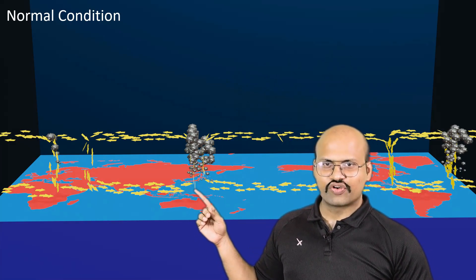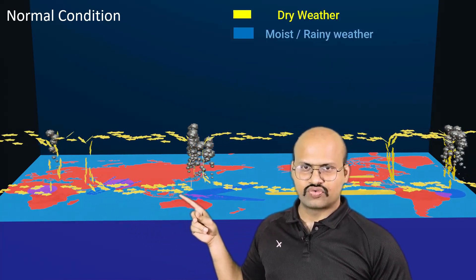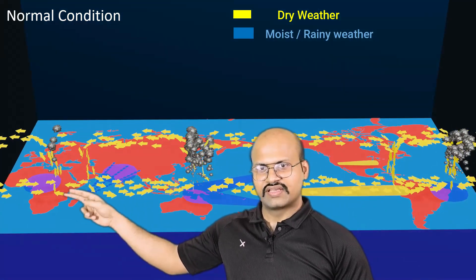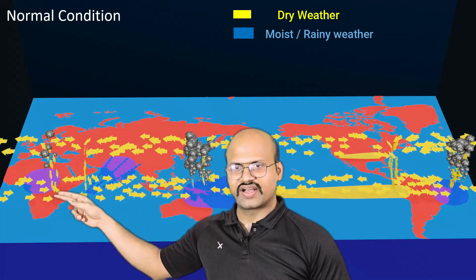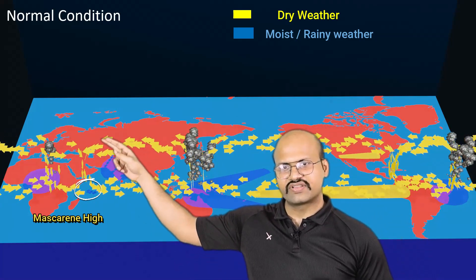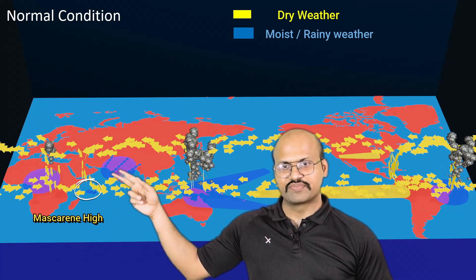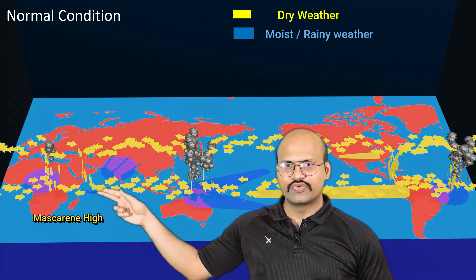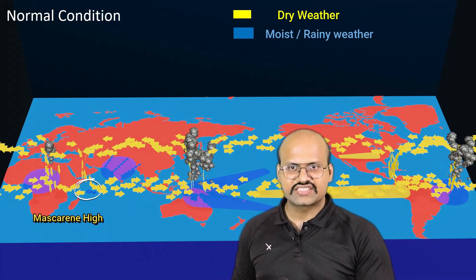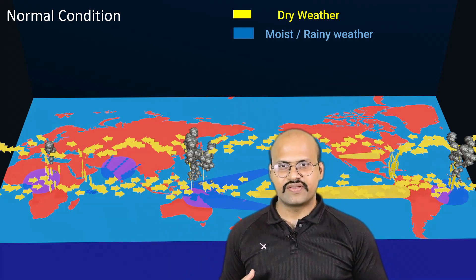One branch of the air rising over Australia moves over the Indian Ocean and descends over a region called the Mascarene High in the Indian Ocean. One branch returns back towards Australia while the other branch moves towards Africa, rising up and giving a lot of rain in Central Africa and Western Africa. The descending air over the Mascarene brings air over the Indian Ocean, which is then carried towards the Indian subcontinent bringing a lot of rain, as it moves over the ocean picking up moisture. Therefore this descending air is very important for the Indian monsoon.